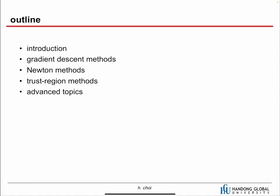There are a couple of algorithms, and these algorithms can be categorized into one of three methods. The first one is the gradient descent method, the second is the Newton method, and the third one is the trust region method. They are all connected, but they have different features. I will also talk about a little more advanced topics in optimization.